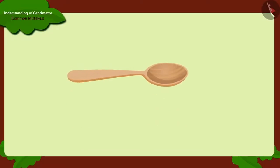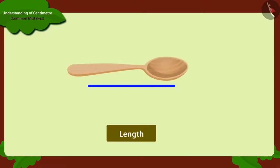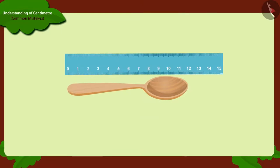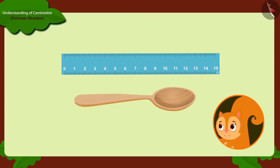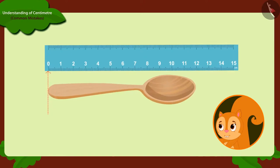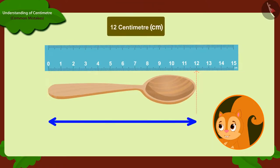Keep in mind, whenever we are measuring the length of any object with a ruler, then we should always keep in mind that we start measuring the length by the zero number. Chanda realised her mistake and measured the spoon from number zero. And this time, she got the length of the spoon exactly twelve centimetres as before.